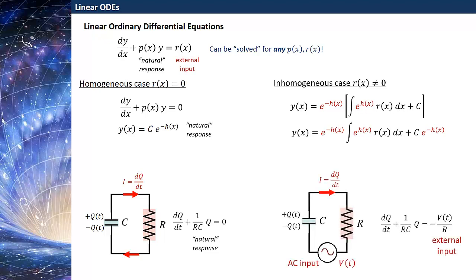What does this correspond to in the language of circuits? This could correspond to a circuit which has a capacitor, a resistor, and an AC input voltage, some time-dependent voltage added into our circuit. The equation governing the charge in the capacitor now has an external input term on the right hand side of V(t)/R. So the r(x) term in the linear ODE is like an external input to your system.